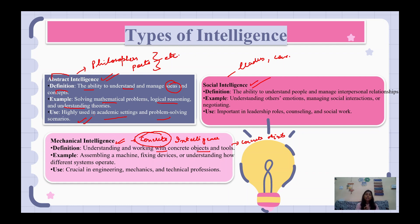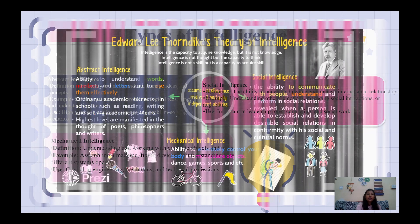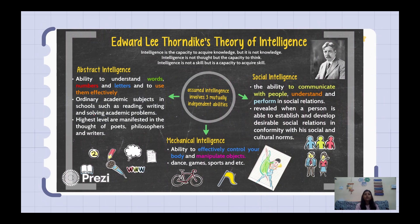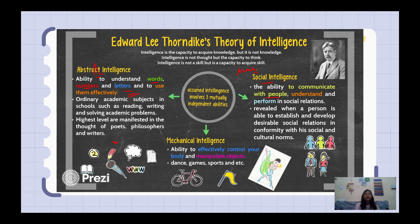E.L. Thorndike has given three kinds of intelligence: abstract intelligence, social intelligence, and mechanical or concrete intelligence. Looking at the summary slide: abstract intelligence is the ability to understand words, numbers, and symbols and use them effectively. Social intelligence is the ability to communicate with people and establish interpersonal relationships — like teachers, social workers, and leaders who get more social intelligence.